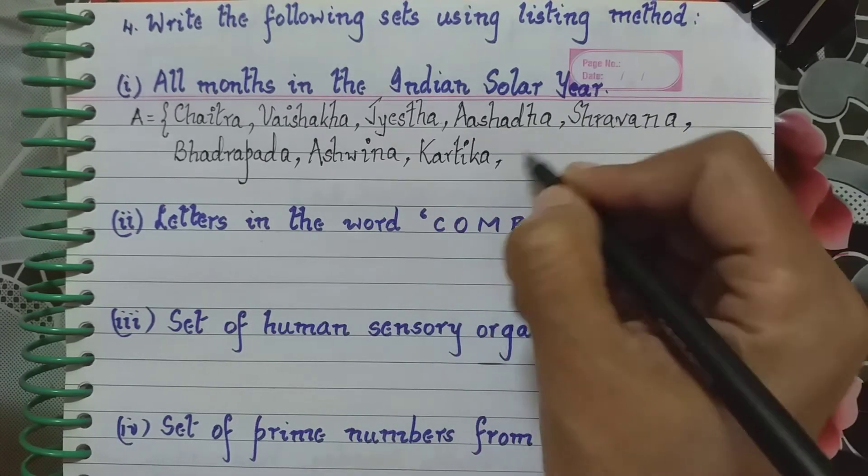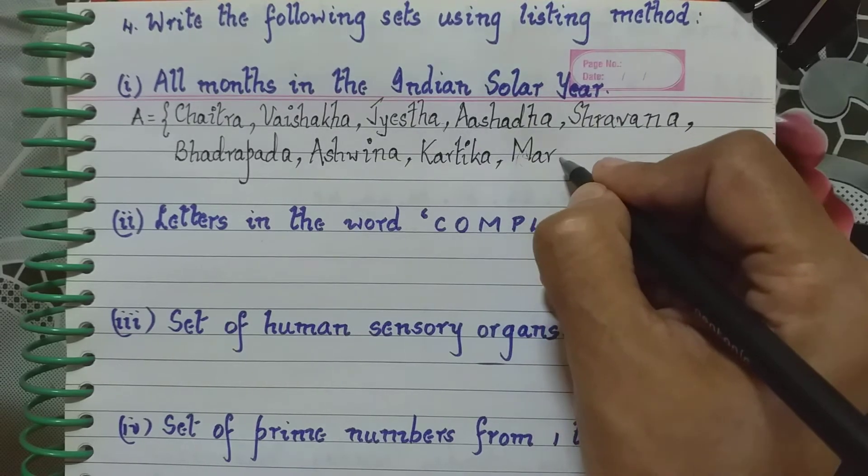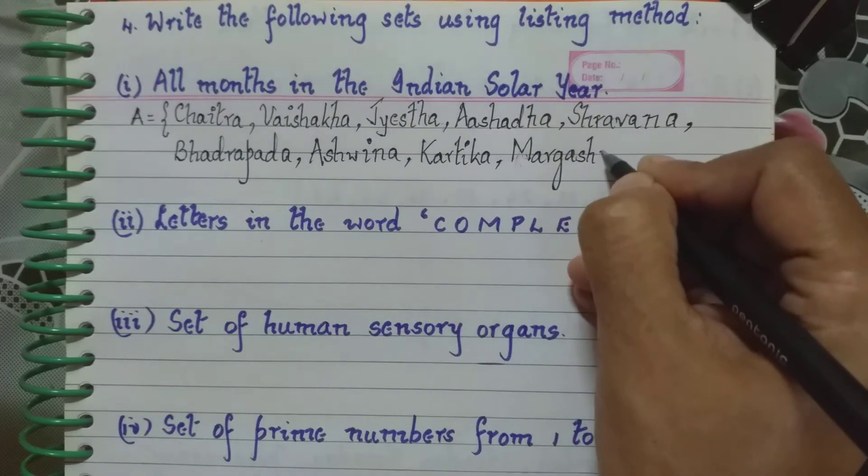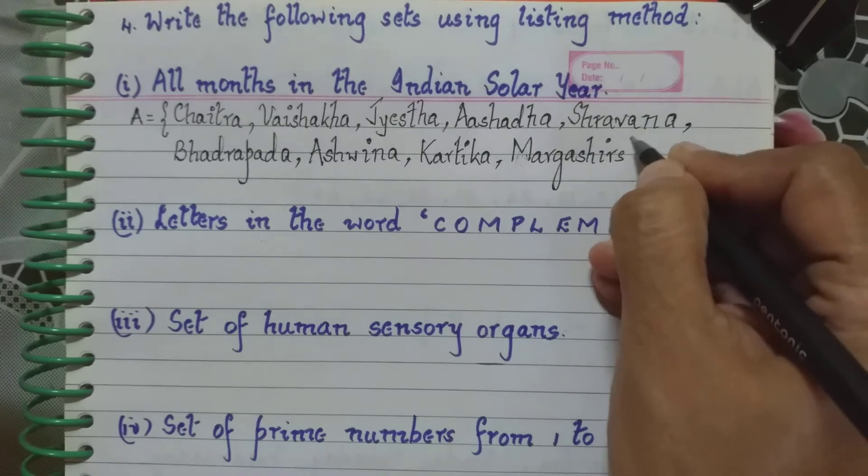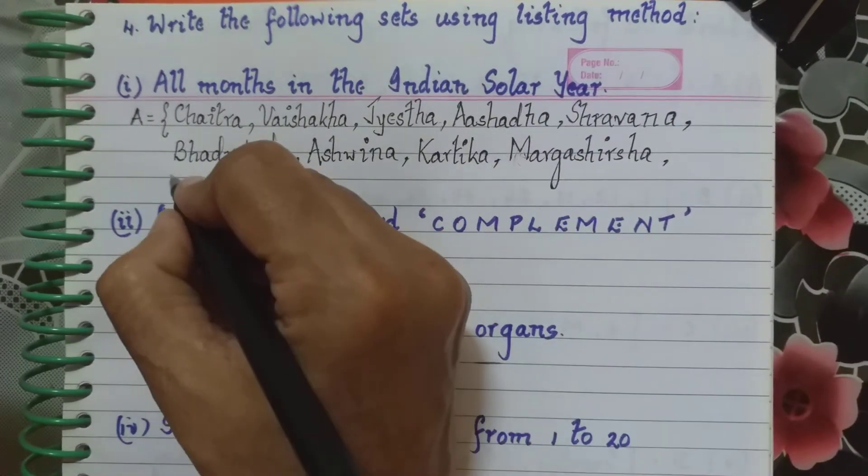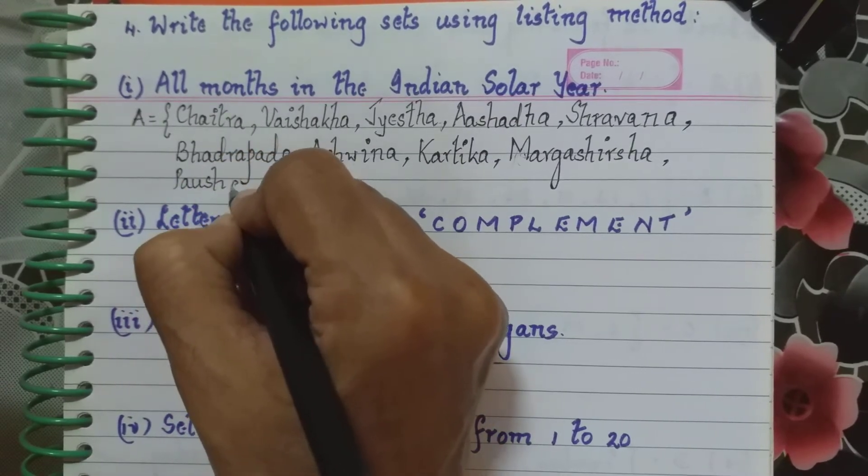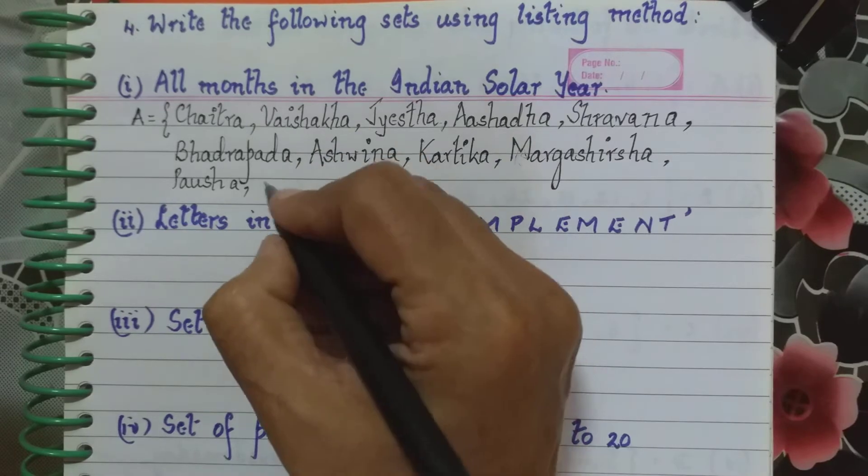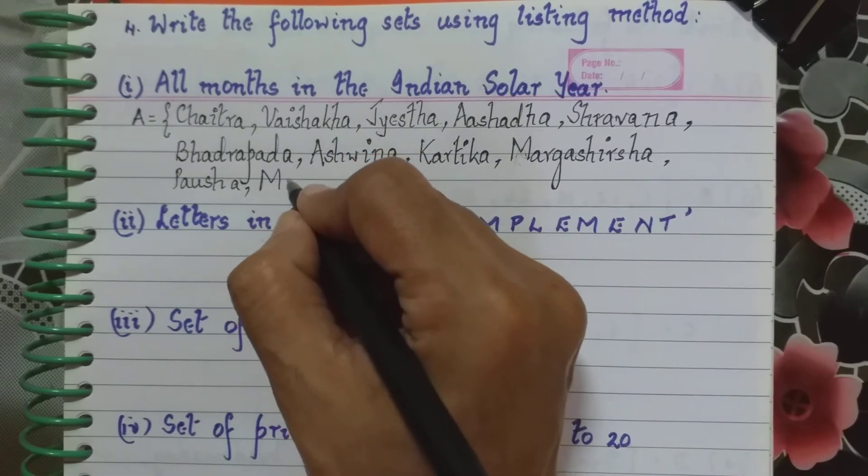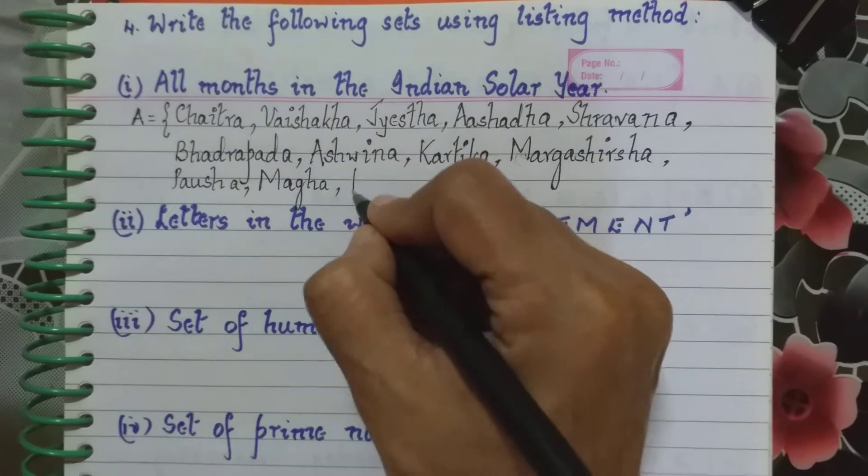Next is Margashirsha, Pausha, then we have Magha, and lastly we have Phalguna.